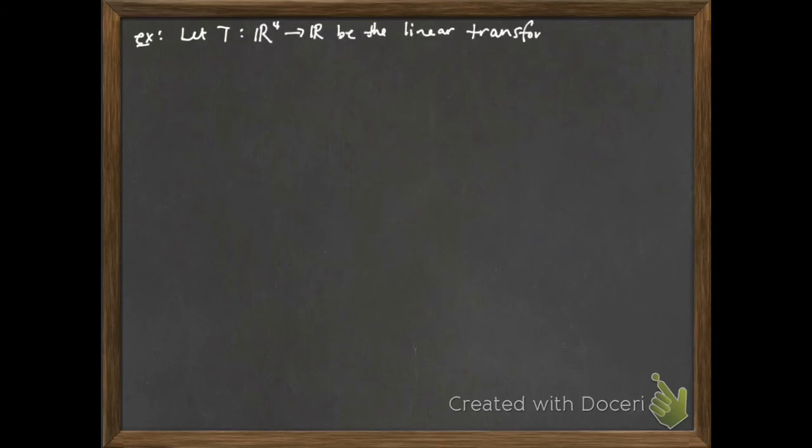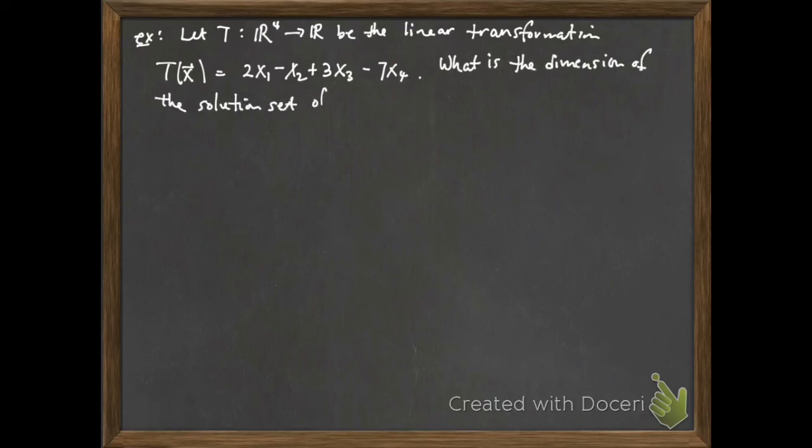Let's look at another example. Suppose I have T from R^4 to R. It's the linear transformation given by T(x) = 2x1 - x2 + x3 - 7x4. What's the dimension of the solution set of Tx equals 0? This homogeneous equation.